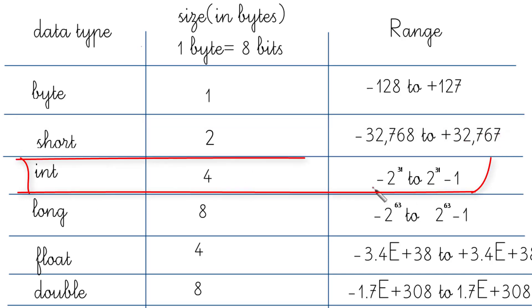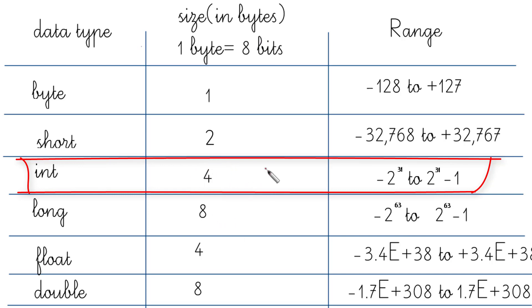For an int, the range is -2 raised to the power 31. Here's the hack: int occupies 4 bytes, which is 4 × 8 = 32 bits. The exponent is one less than the bit count, so it's 2^31. On the positive side it's one less than that magnitude: 2^31 - 1. So the range is -2^31 to 2^31 - 1.